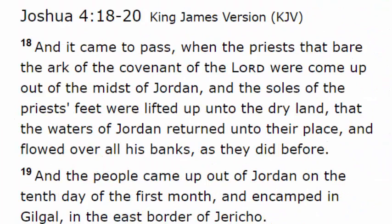The next verses we want to look at are in the book of Joshua chapter 4. This is after Moses and Aaron had passed away and Joshua has taken the leadership over the children of Israel, leading them across the River Jordan to the Promised Land. Verse 18 reads: 'And it came to pass, when the priests that bear the Ark of the Covenant of the Lord were come up out of the midst of Jordan, and the soles of the priests' feet were lifted up unto the dry land, that the waters of Jordan returned unto their place, and flowed over all his banks, as they did before.' This is the second time our Father parted waters for the children of Israel to cross — just like the Red Sea, the River Jordan was halted, allowing them to walk across on dry land.